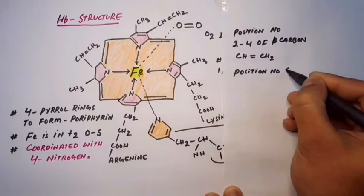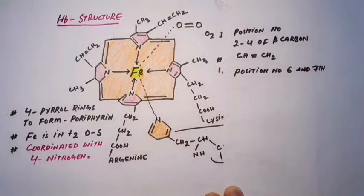On the sixth and seventh position of the beta-carbon, propanoic acid groups are attached.